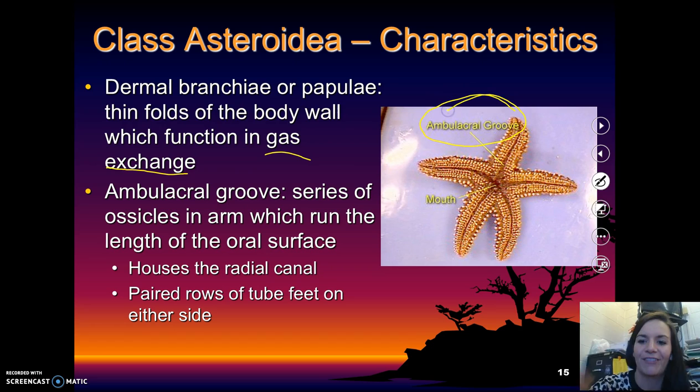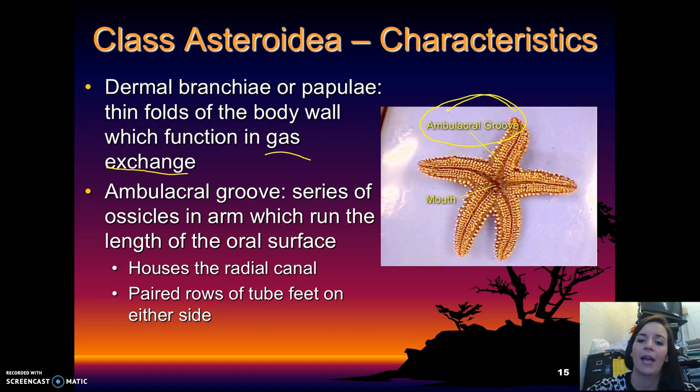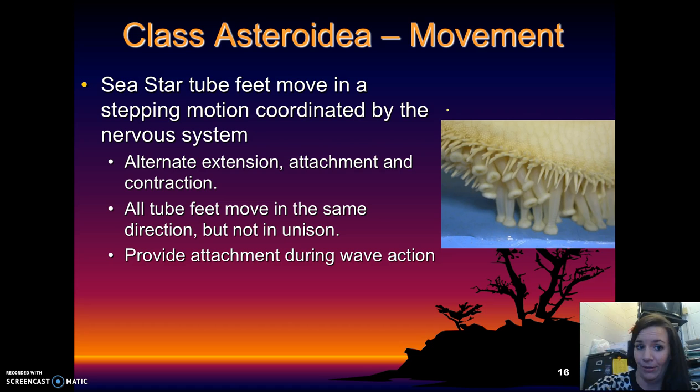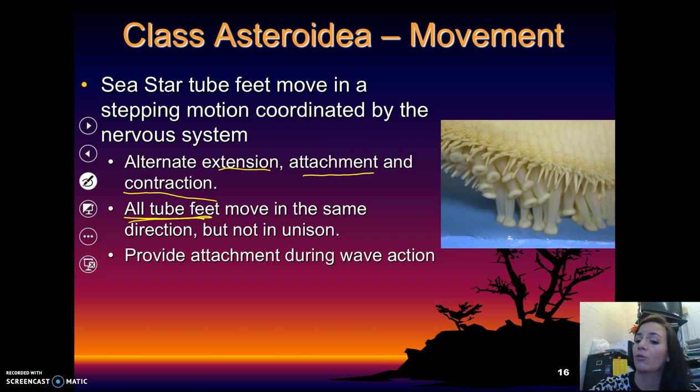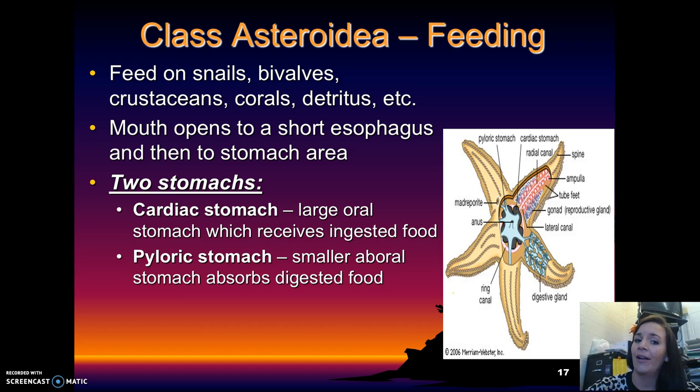They also have something called the ambulacral groove. If you look at this picture, it runs the length of the oral surface and it houses the radial canal we talked about, and rows of tube feet are on either side of this groove. They move in a very coordinated stepping system, coordinated by the nervous system — an alternate extension, attachment, and contraction. The tube feet move in the same direction but not necessarily in unison, and this also helps provide attachment during wave action or rough waters.